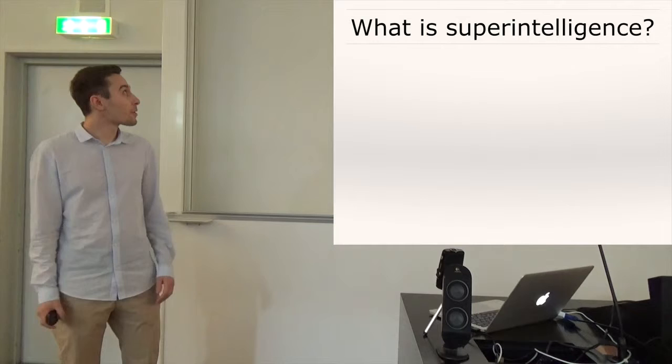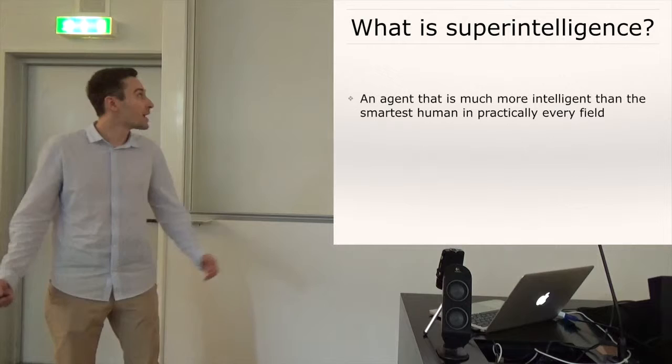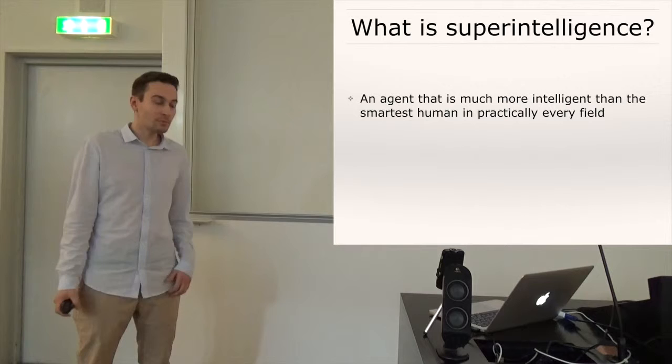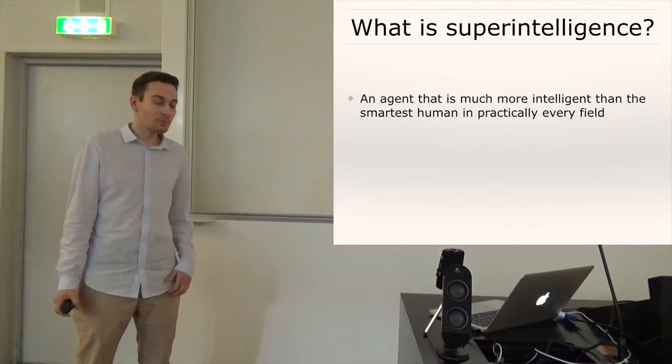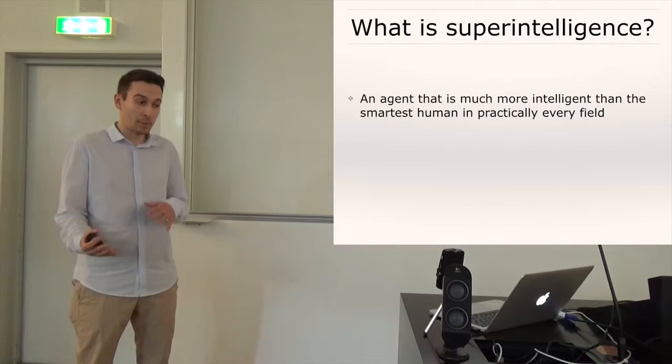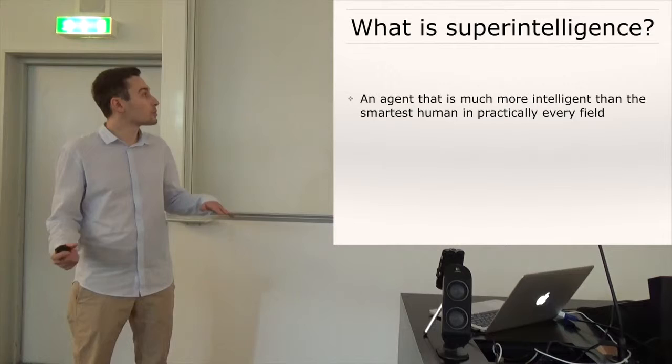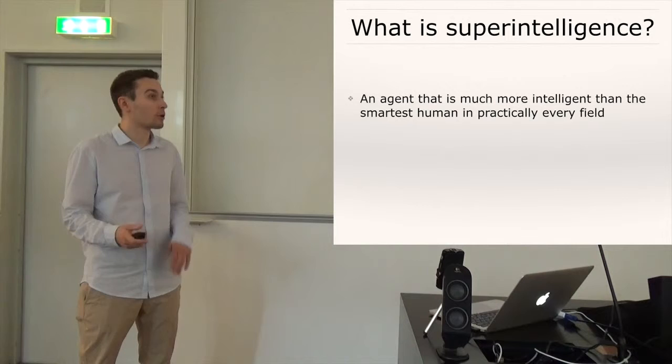So then the next terminological question is what superintelligence actually means and it's quite simple. Any agent is super intelligent that is just much more intelligent than the best or most smartest human in practically every field, like not only math and physics, but also in other stuff like social skills, for example. And what's important, a superintelligence doesn't necessarily have to be conscious. It can be just an unsentient, non-sentient optimization process, for example.